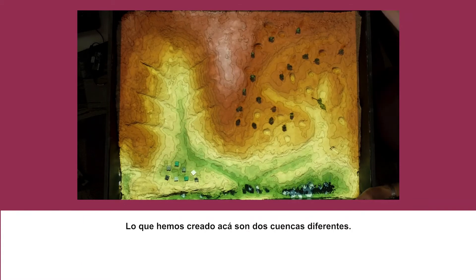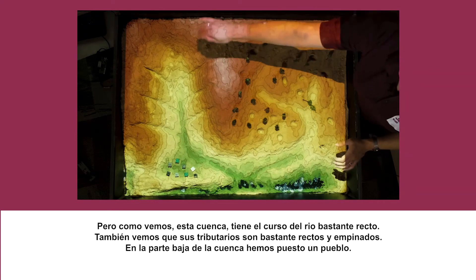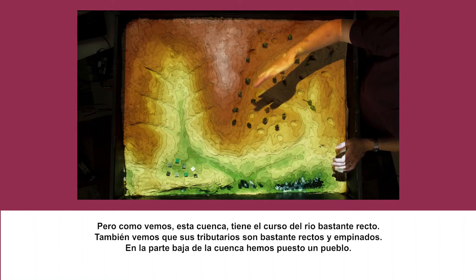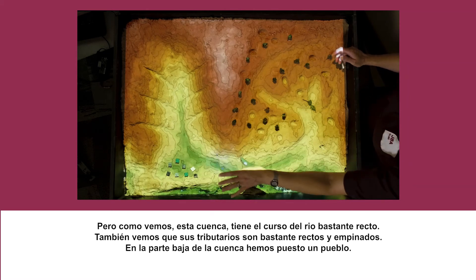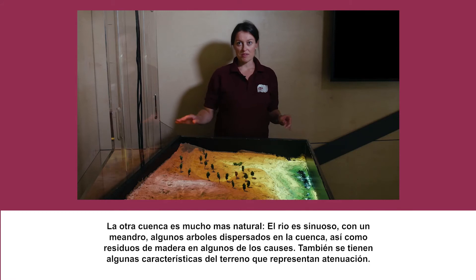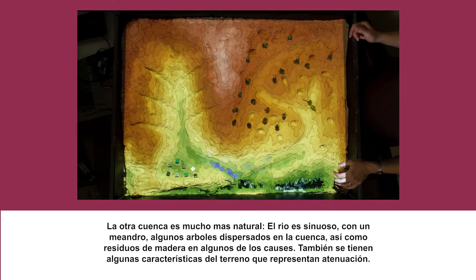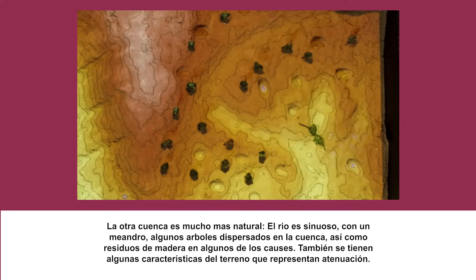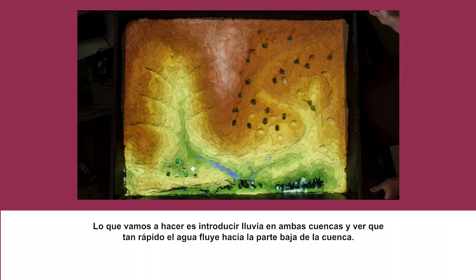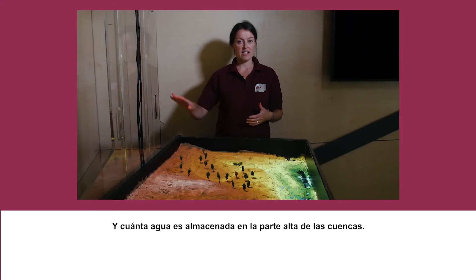What we've created here are two contrasting catchments. They've both got roughly the same gradient from top to bottom, but this one has a much straighter channel with very straight, steep tributaries feeding into it, and a settlement of Lego bricks representing houses at the bottom. The other side is a more naturalised catchment — a meandering river channel, trees planted around, woody debris in the channels, and small runoff attenuation features. We're going to introduce rain into both and see how quickly the water flows down and how much is stored in the upland areas.